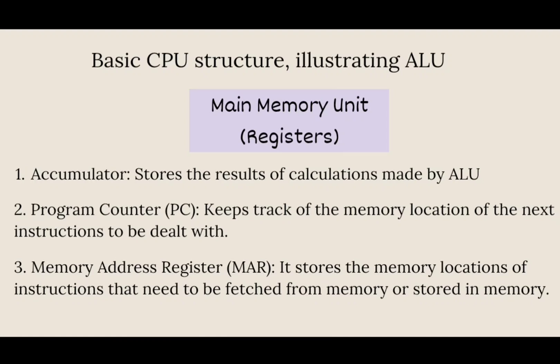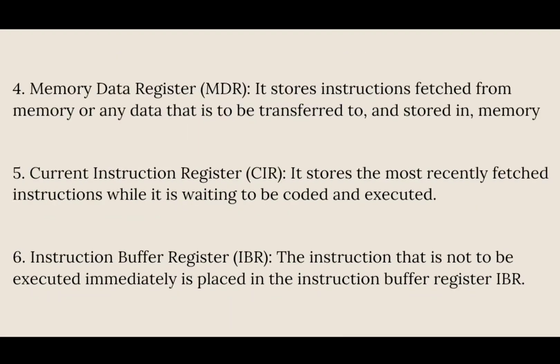The accumulator holds temporary operands and results of ALU operations. The program counter contains the address of the next instruction to be fetched from memory. The memory address register specifies the address of memory for the word to be written or read. The Memory Buffer Register (MBR), also called the memory data register, holds information — a program word or data word — being transferred between memory and the central processor.